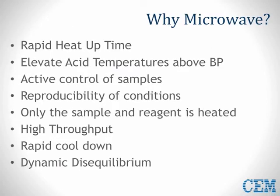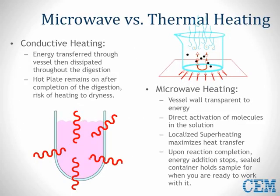The use of a microwave to provide the energy allows for the instantaneous heating of the liquids as compared to conventional heating. Microwave energy is applied at full power instantly and can be modulated much better than conventional conductive heat, so it produces a more uniform heating of the sample. As illustrated in this diagram, microwave energy has many advantages versus conductive heat.